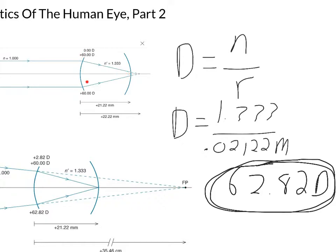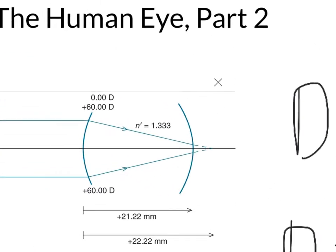But you only have 60. So that means you need another 2.82 diopters. That's why you put a lens on the eye, a positive 2.82 diopter lens on the eye, to make the focal point fall on the retina, therefore giving you clear vision. And that's your lens prescription.